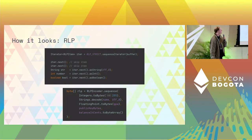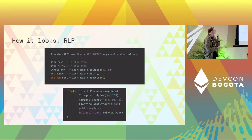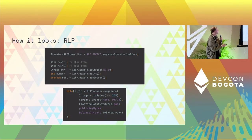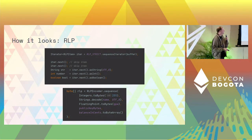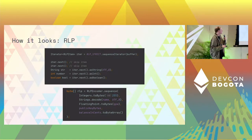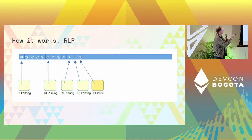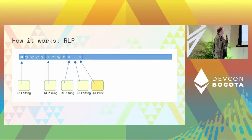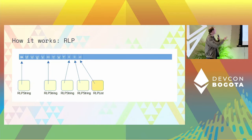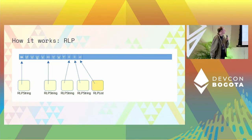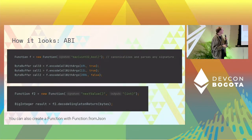Here's the API for the RLP stuff. This is different because it uses an iterator pattern and it decodes on demand instead of eagerly. All these objects just sort of point at a byte buffer and you can decode directly from the byte buffer on demand, which saves some time.